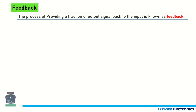What is feedback? Feedback is a process of providing a fraction of the output signal back to the input. We have an output of an amplifier, and we give part of that as an input to the amplifier again — that signal is called the feedback signal.